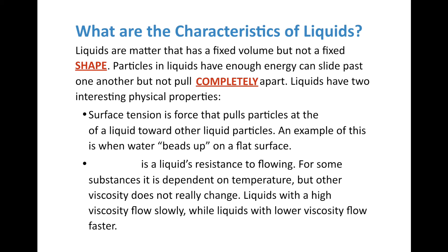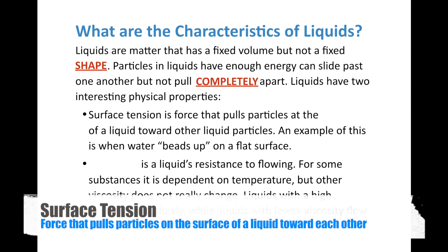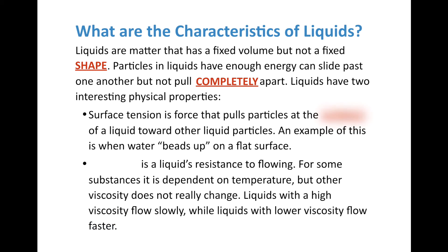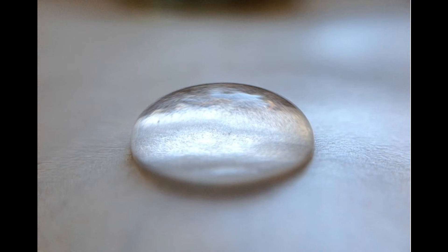Liquids have two interesting physical properties. The first is surface tension — the force that pulls particles of a liquid toward other liquid particles. An example is when water beads up on a flat surface. Looking at a water droplet, the molecules at the edges pull inward. That inward pull creates a circular or spherical shape — which is also why Earth is a sphere, because gravity pulls everything toward the core. That rounded shape is surface tension.